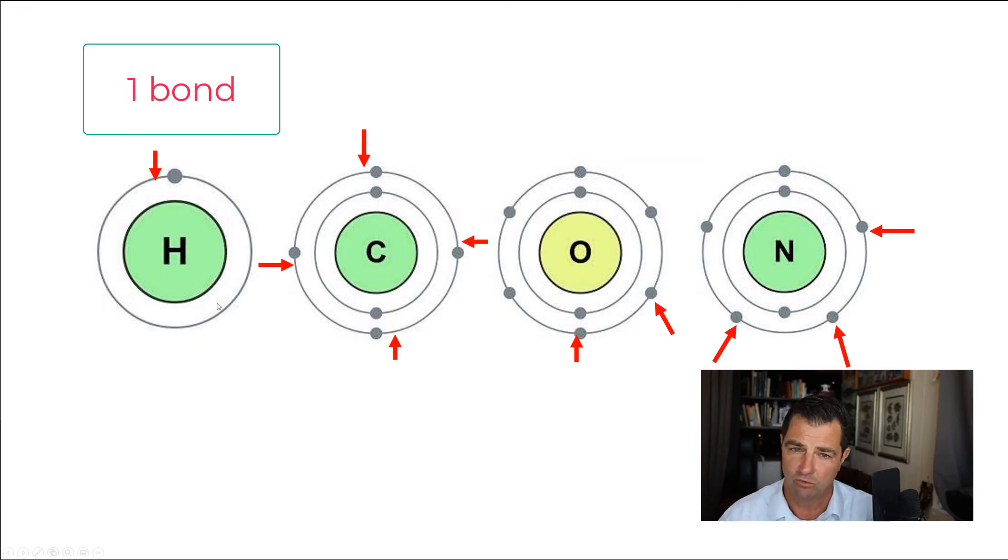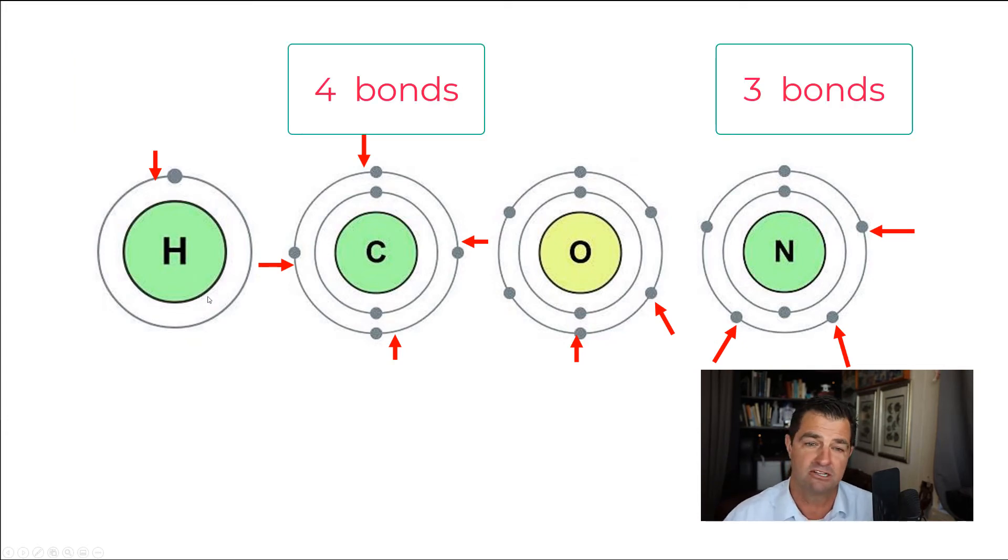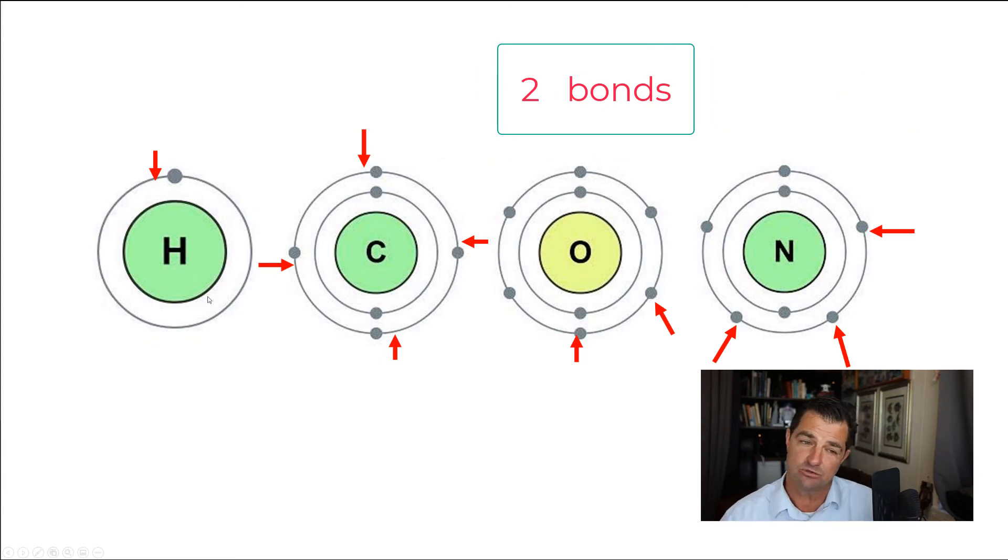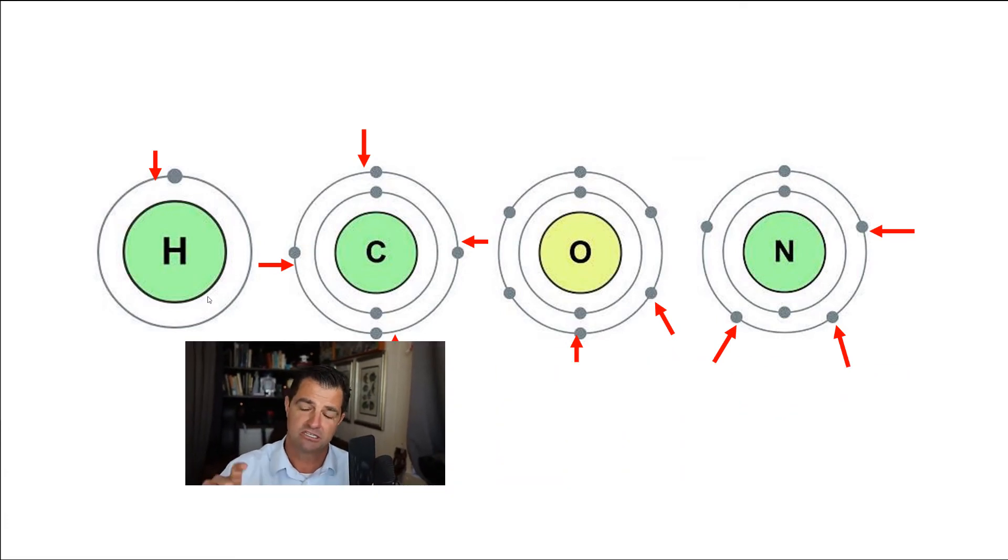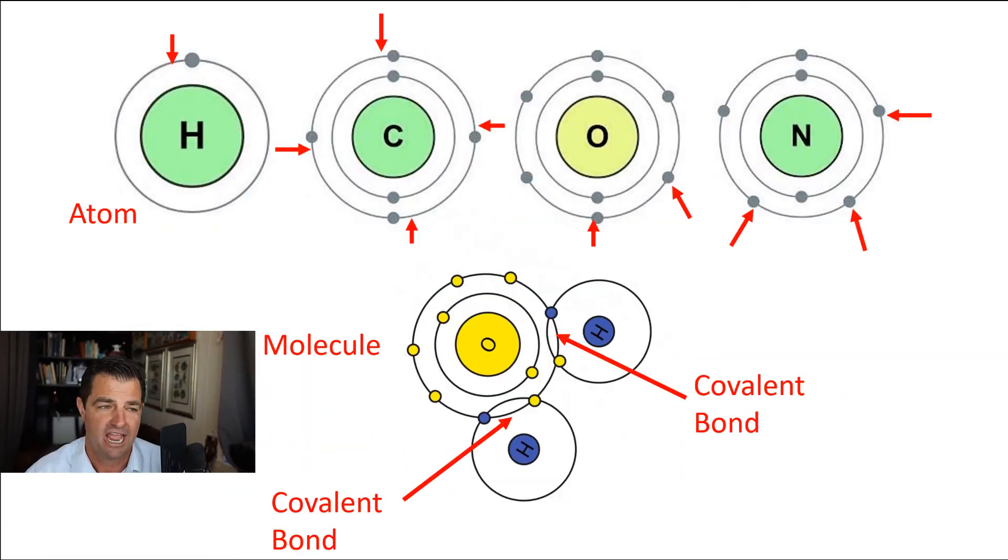...because what you really need to remember is that because of these open spots, we can expect in general, hydrogen is going to form one bond, carbon is going to generally form four bonds, oxygen is going to form two bonds, and nitrogen is going to form three bonds. Sometimes atoms will form what we call a double bond, but let's worry about that later on. Let's start with that basic rule of one bond, four bonds, two bonds and three bonds for these particular atoms.